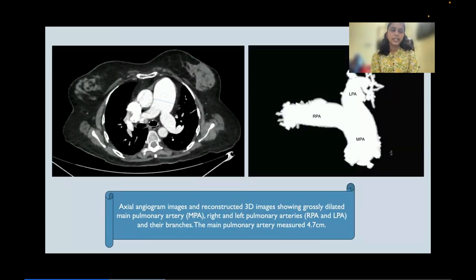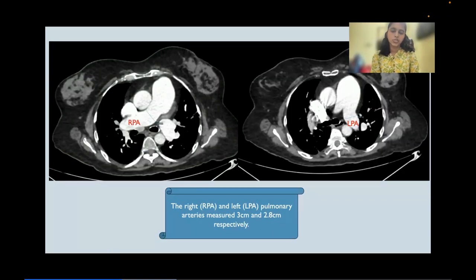Axial angiogram and 3D reformatted images showed a grossly dilated main pulmonary artery and right and left pulmonary arteries and their branches respectively. The main pulmonary artery measured around 4.7 cm. The right and left pulmonary arteries measured approximately 3 cm and 2.8 cm respectively.